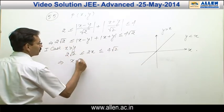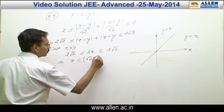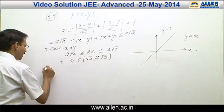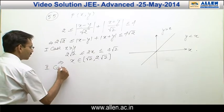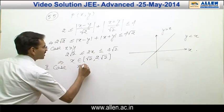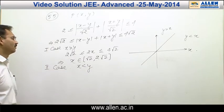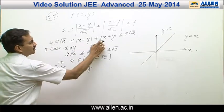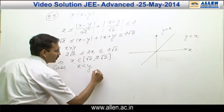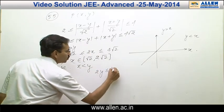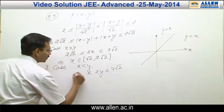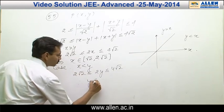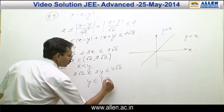This implies x belongs to the interval root 2 to 2 root 2. Similarly, in Case 2, when x is less than y, we write y minus x plus y plus x, which gives 2y. So 2y is between 2 root 2 and 4 root 2, therefore y belongs to root 2 to 2 root 2.